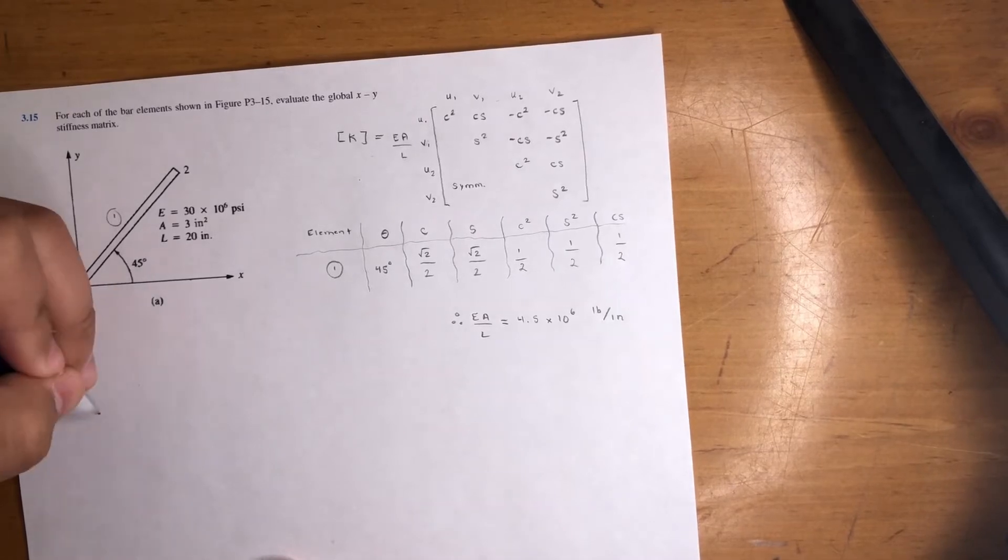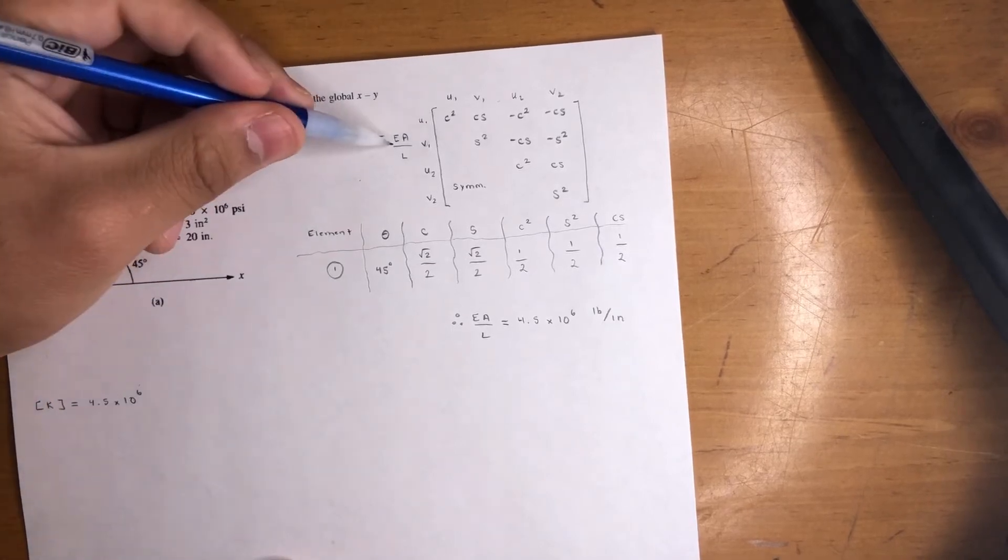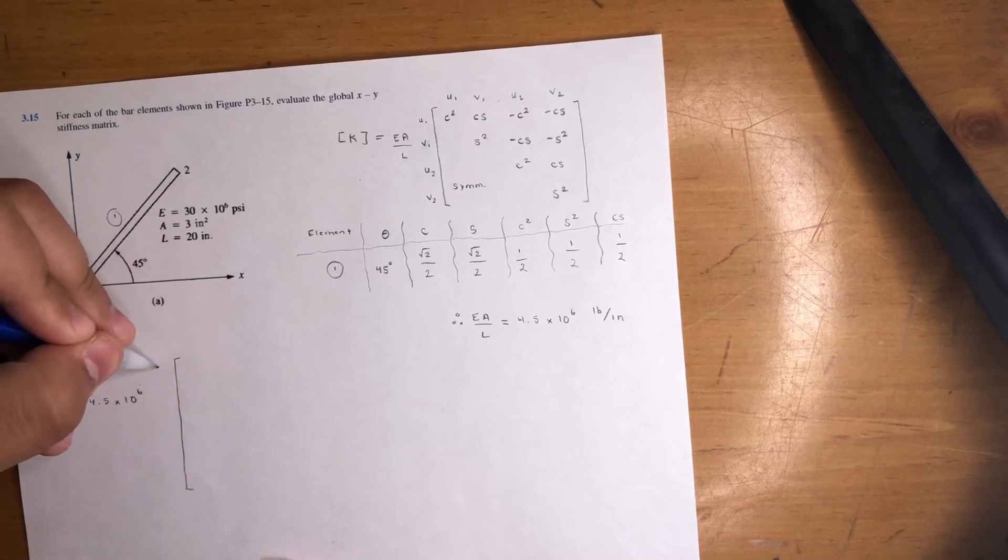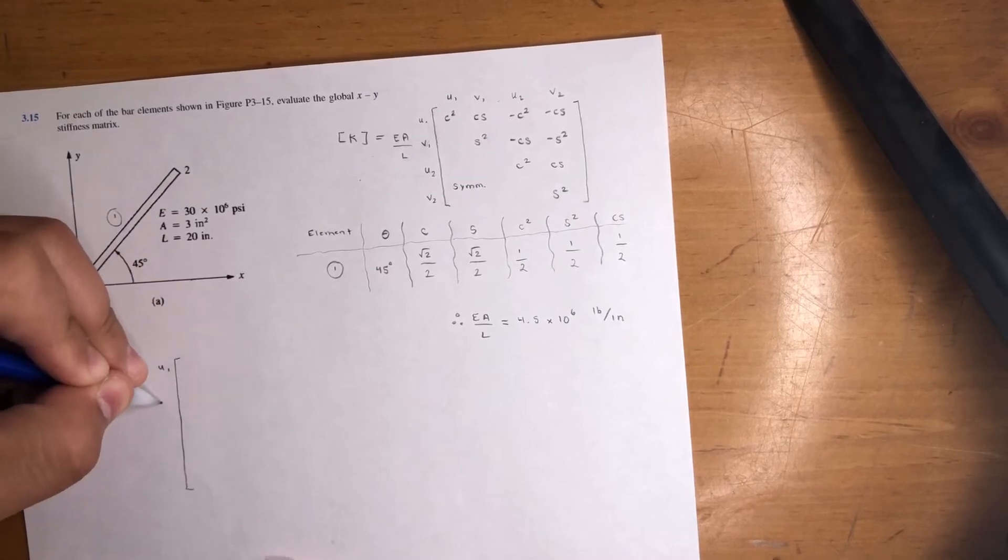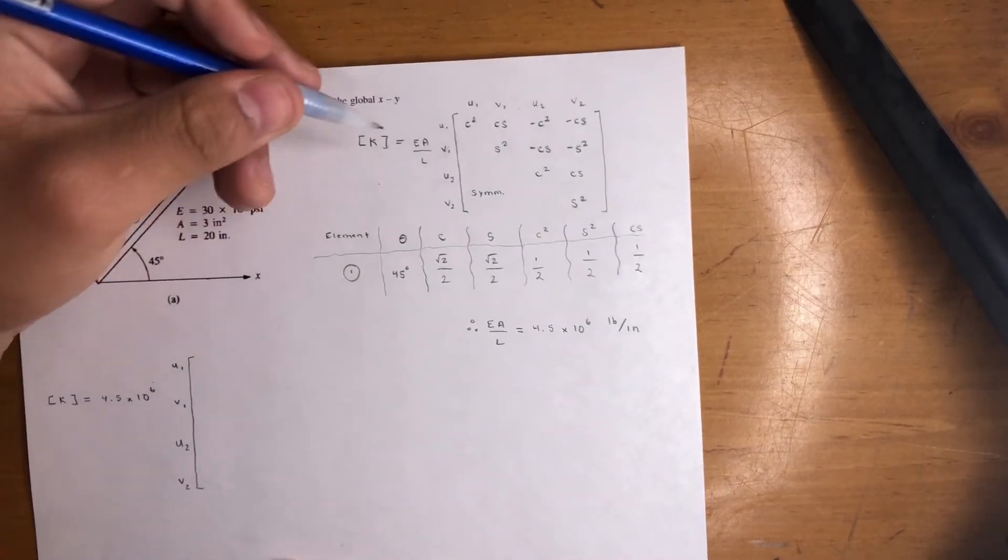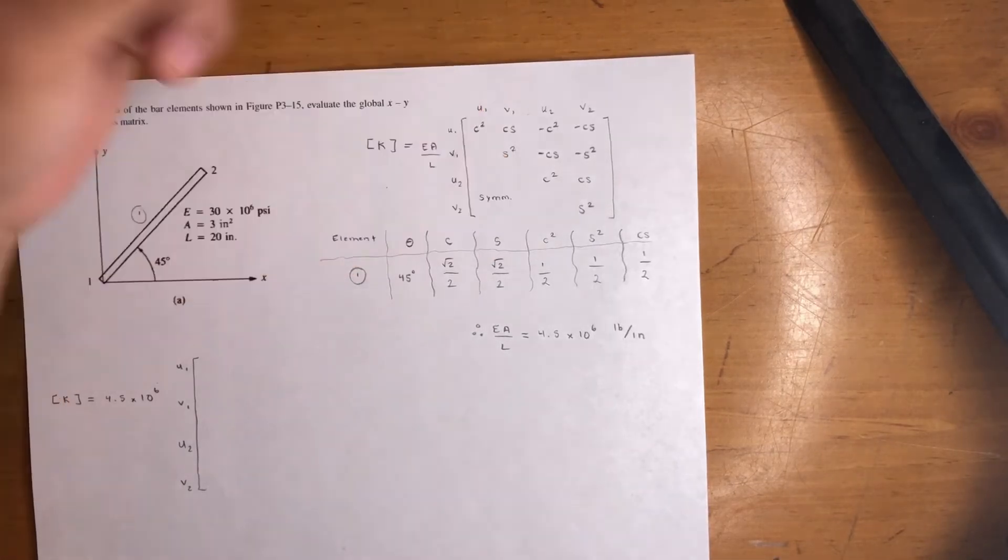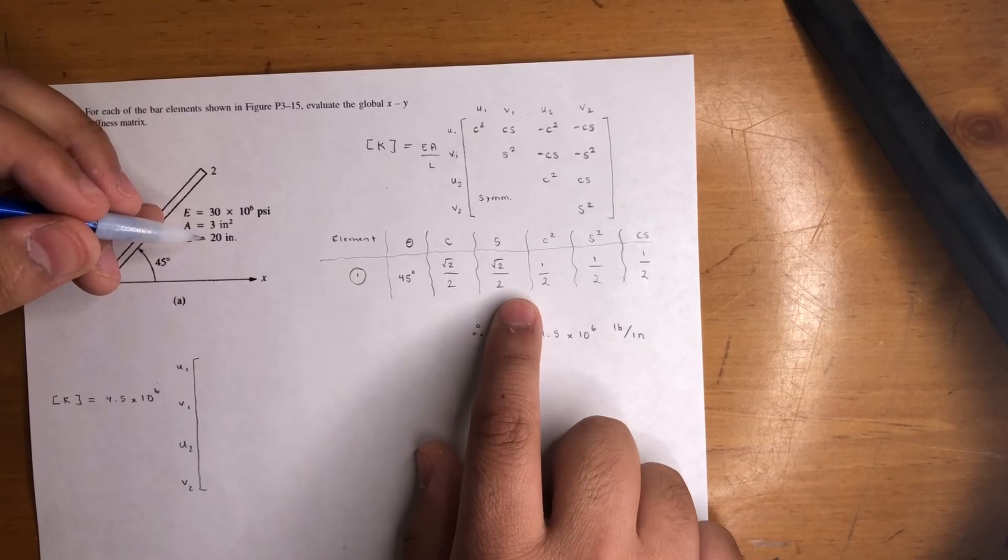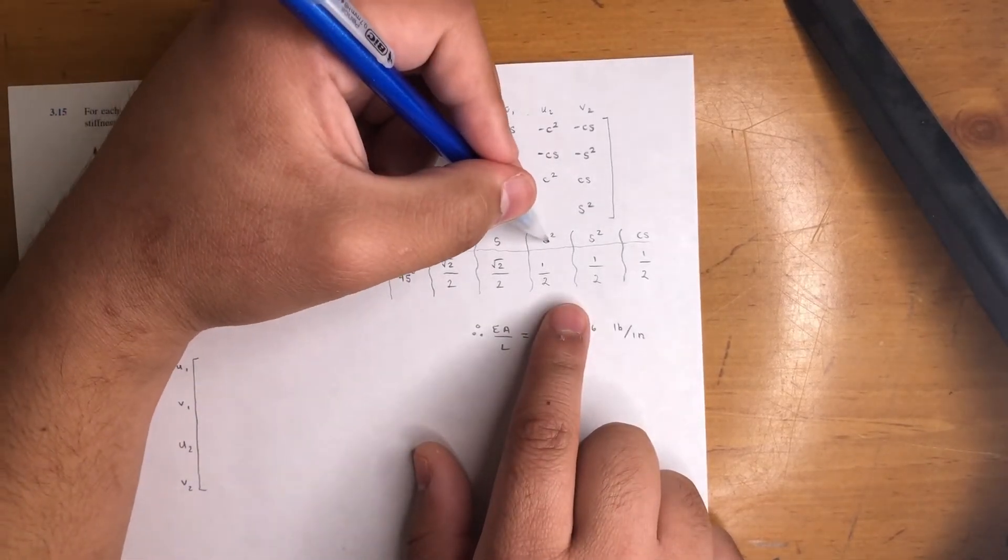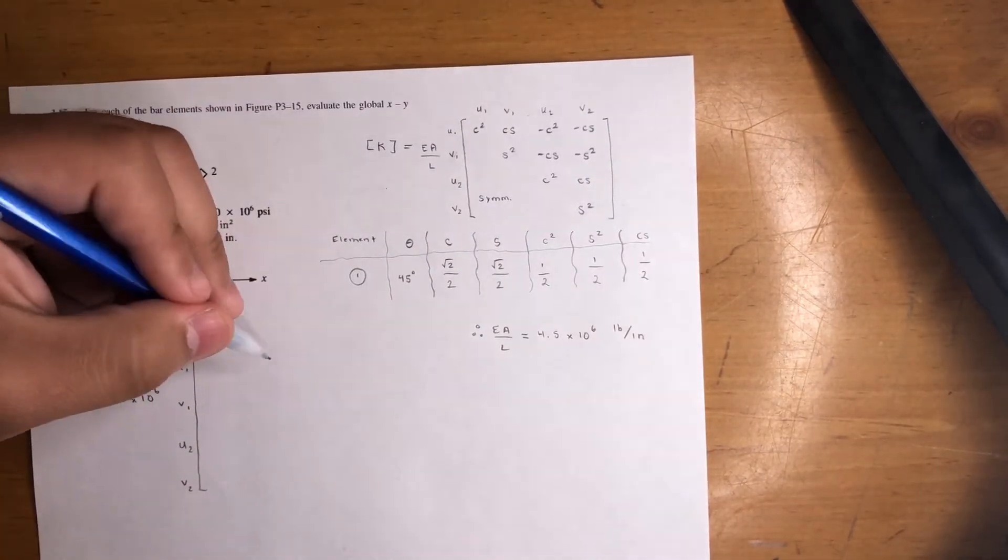K equals 4.5 times 10 to the 6 times EA over L. I like to give myself some space because sometimes these things are complicated. U1, V1, U2, V2. The first one is cosine squared, which we got right here—it's just one half. That's why I do these tables. Technically you could do all these in your head, but I like to go the extra mile. C squared, S squared, and Cs—that's what our matrix is. So you just plug in now.